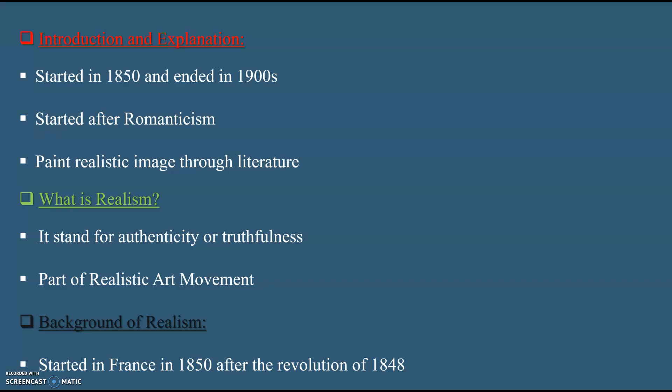Works of George Eliot and William Dean Howells are some of the earliest examples of this writing. The Realism art movement started in France in the 1850s after the revolution of 1848. Realists rejected Romanticism, which had dominated French literature and art since the late 18th century, and revolted against its exaggerated emotionalism and drama.